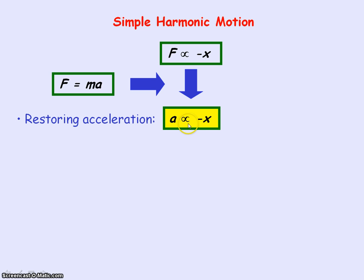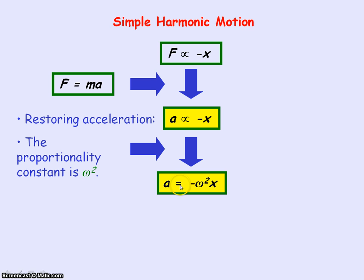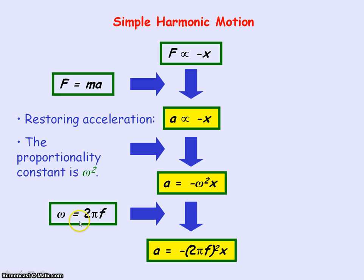To get this into an equation, we need to introduce a proportionality constant. And in this case, it's the angular frequency squared. So a will equal minus angular frequency squared times the displacement. We know the angular frequency equals 2 pi f. So this becomes the equation for simple harmonic motion for the restoring acceleration, the acceleration acting on an oscillation.